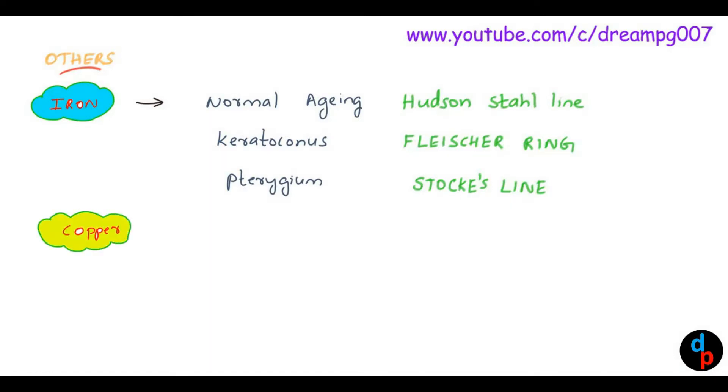Copper deposition in the eye is seen in Wilson's disease. It is presented as Kayser-Fleischer ring.